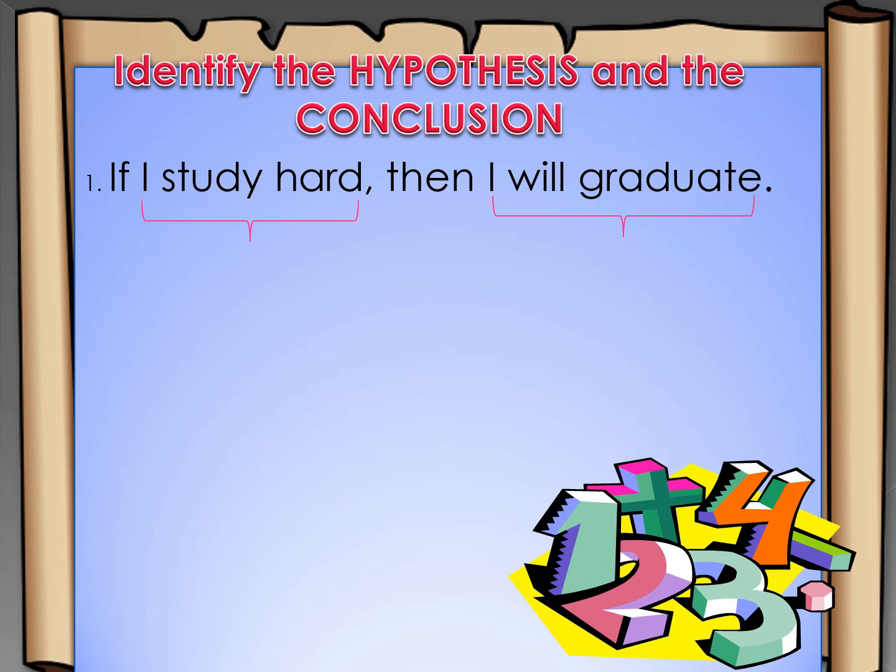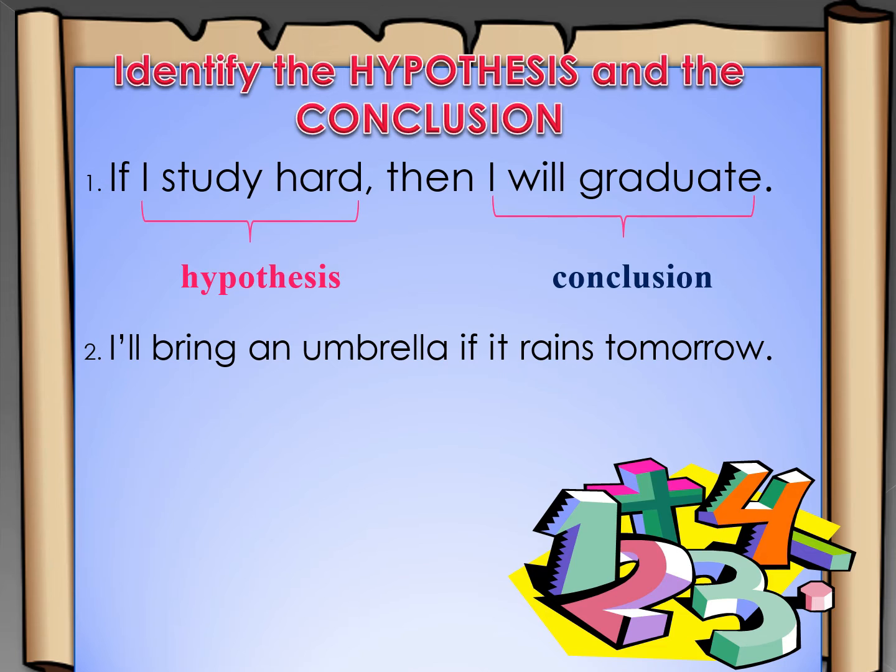Now, we will have some examples. Let us identify the hypothesis and the conclusion. In number one: if I study hard, then I will graduate. What would be our hypothesis, and what would be our conclusion? Our hypothesis is: if I study hard, and our conclusion is: I will graduate. How about our example number two? I will bring an umbrella if it rains tomorrow. The hypothesis is: if it rains tomorrow. And our conclusion is: I will bring an umbrella.